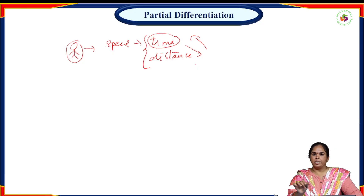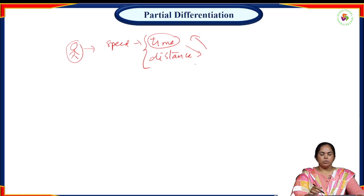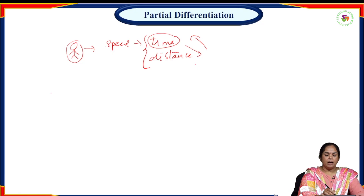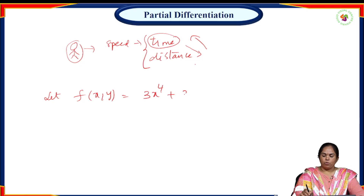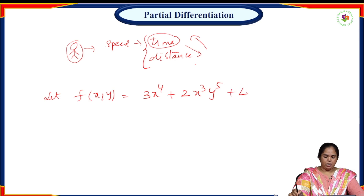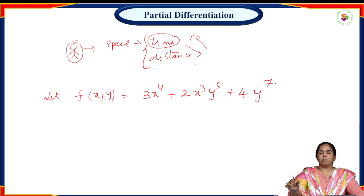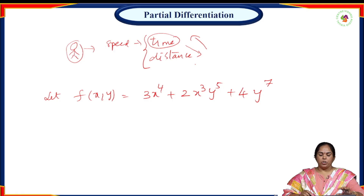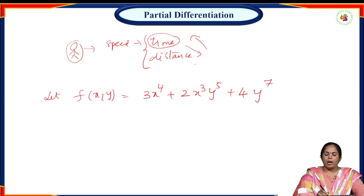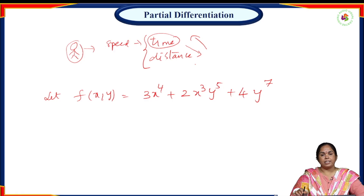We can find time keeping distance as constant, and find distance keeping time as constant. In such cases we can use partial differentiation. Coming to a small example: let f(x, y) = 3x⁴ + 2x³y⁵ + 4y⁷.